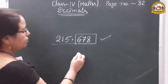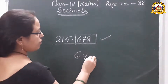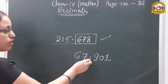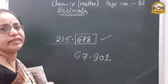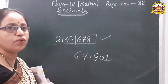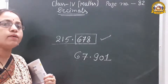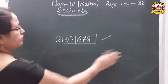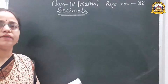Another example: suppose 67.901. We cannot read it as 'sixty-seven point nine hundred one.' The correct way is 'sixty-seven point nine zero one.' After the decimal, we read all digits separately. That is how we read decimal numbers.